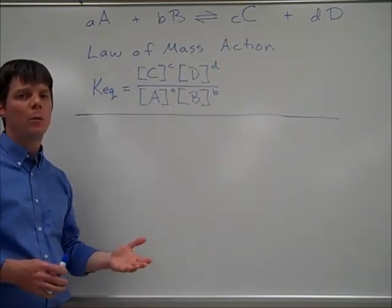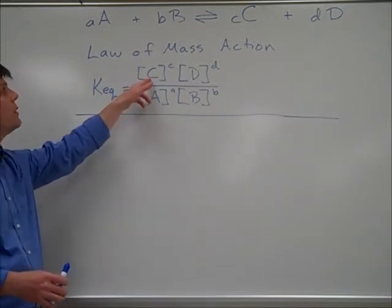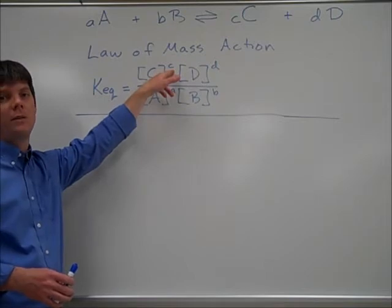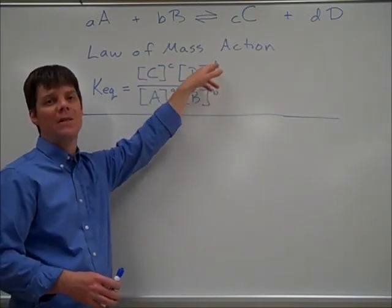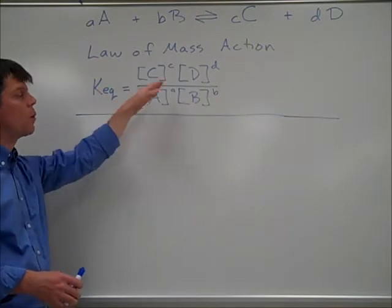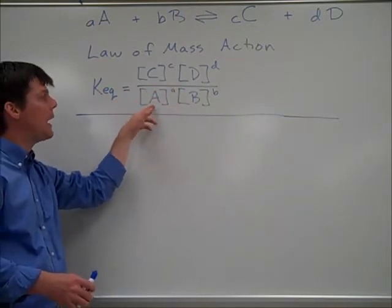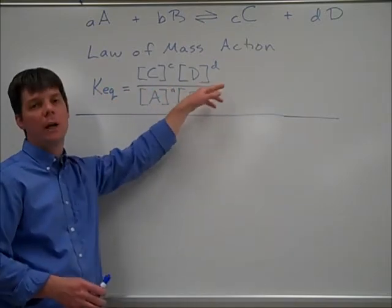So we come up with an equilibrium expression of C raised to the lowercase c power times D raised to the lowercase d for an exponent. This is going to be divided by A raised to the A, B raised to the B.